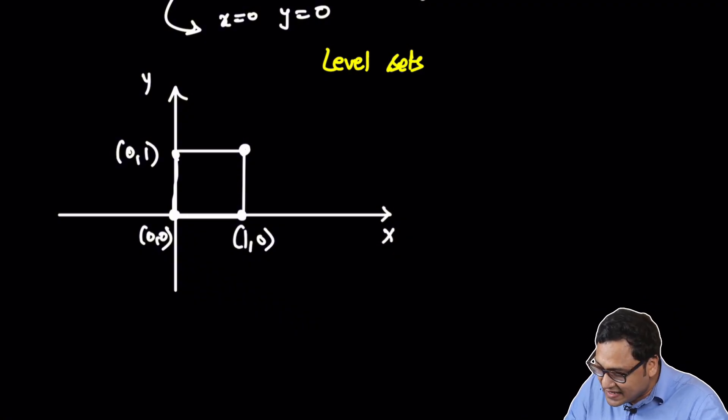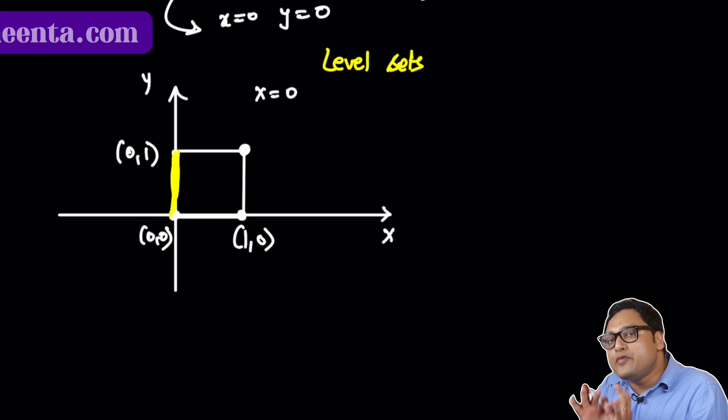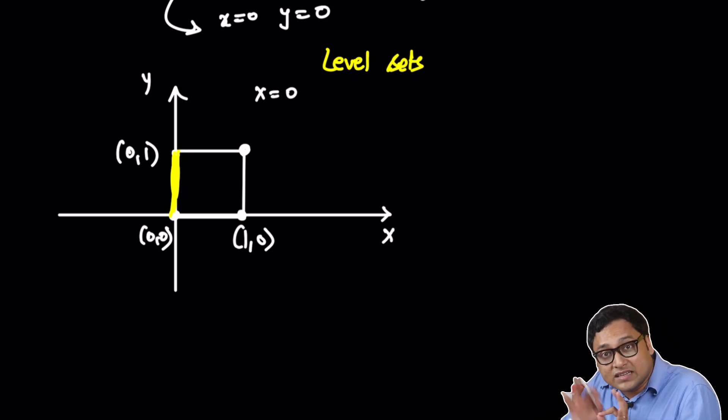So what is the other strategy? The other strategy is to draw level sets. So I will give you an example of how that works in this particular case. What you do is that you take one line, you fix one of the coordinates. So suppose if I fix x equal to 0, then my input is just this line segment.